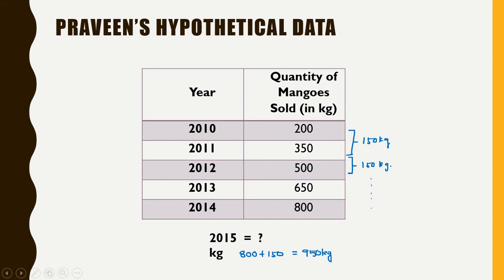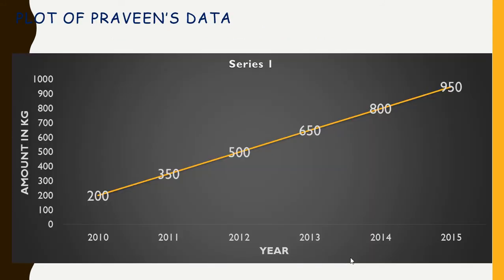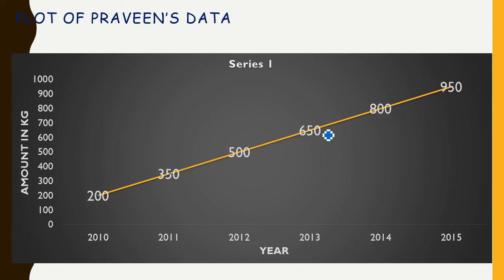If I look at this data visually, he started selling in 2010 with 200 kg of mango, it rose to 350, then to 500 in 2012, which rose to 650 in 2013 and 800 in 2014. If this trend continues, then in 2015, extending this straight line, we can get 950 kg for the year 2015. So the data helped to give an answer to his question.